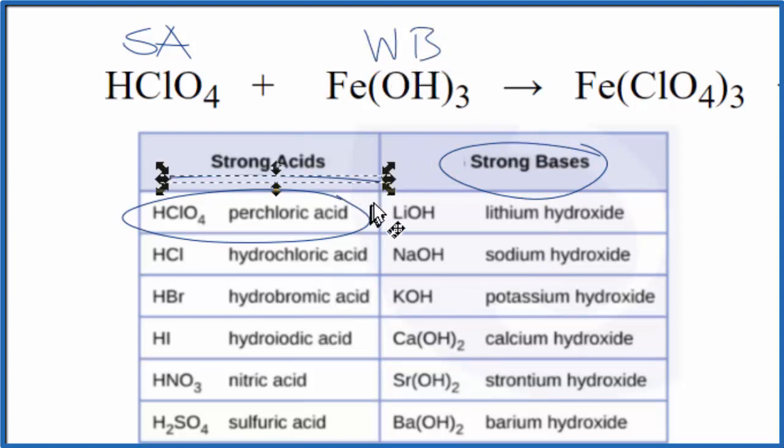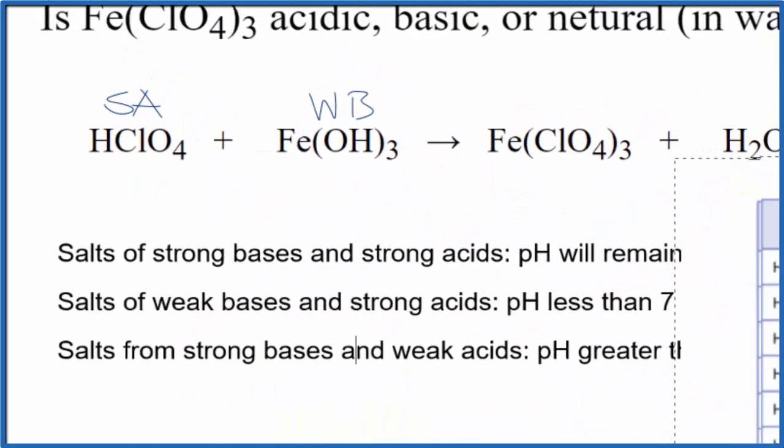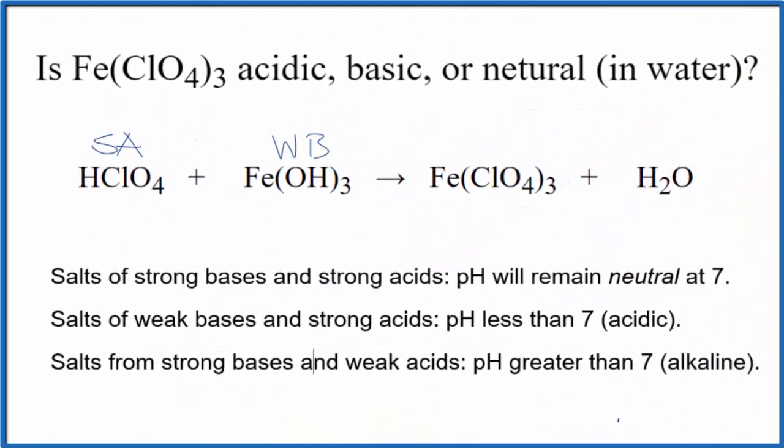So now we have the strength of the acid and the base. We can use that and the rules to figure out whether we have an acetic, basic, or neutral solution. Looking down our rules, we have a strong acid and a weak base. Here's a strong acid and a weak base. The pH will be less than 7, so it's going to be acetic.